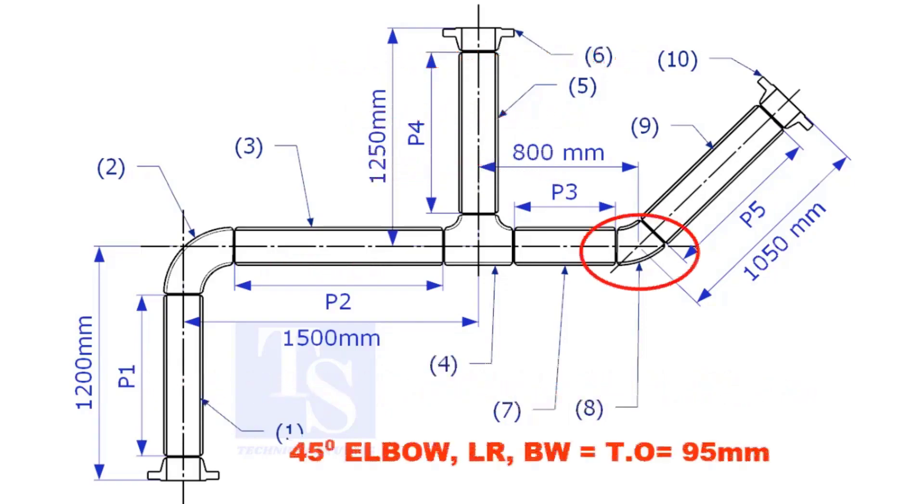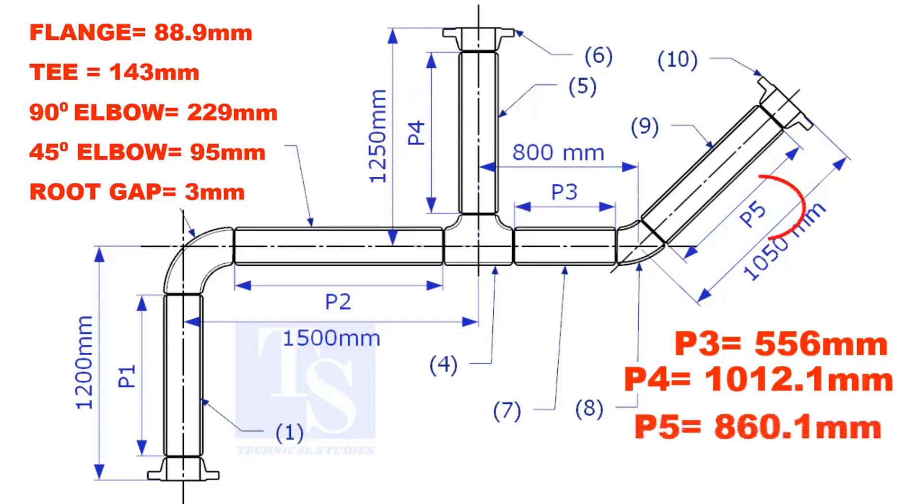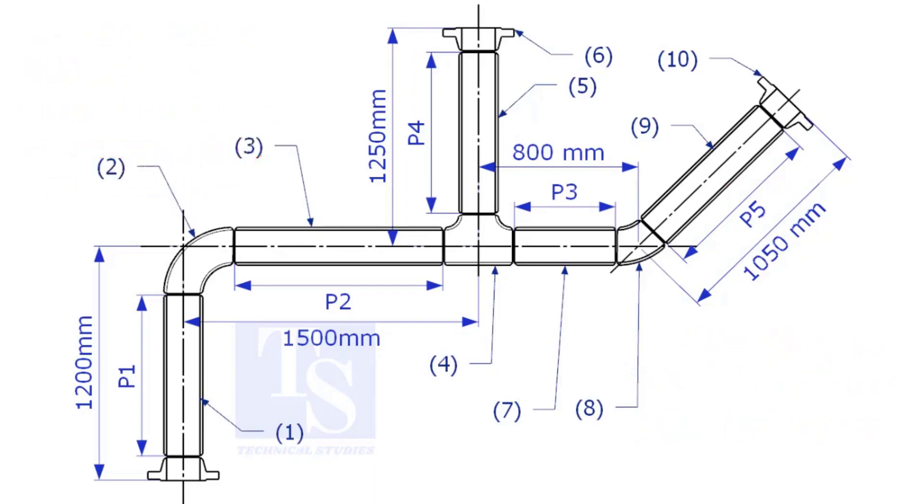Take-off length of the 45 degree elbow is 95mm. The length of pipe P3, P4, and P5 are given. You can cross-check if the answers are correct or not. Please check the description for this sketch. Thank you for watching.